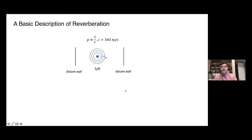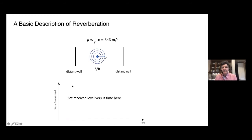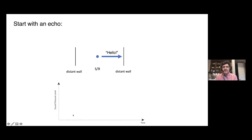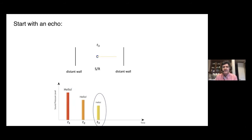We might imagine a scenario with two big, hard walls, maybe 15, 20, or 30 meters away. They reflect sound very well, so we'll assume they reflect perfectly — the sound hits and bounces off without any loss of energy. We'll put the source and the receiver right in between and let everything remain constant. This is something you may have experienced. This axis will be sound pressure level, related to perceived loudness, and this is time. If you say something or clap your hands, that sound hits the boundary and bounces back, and you hear it again.